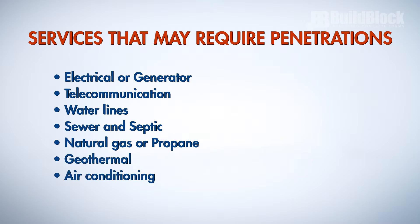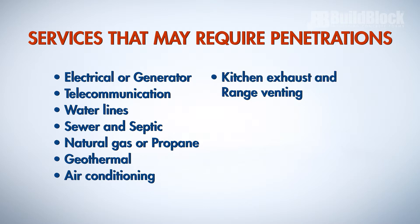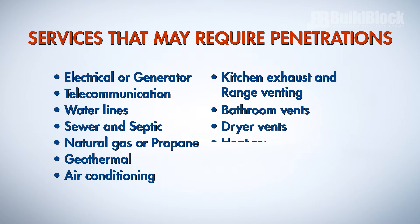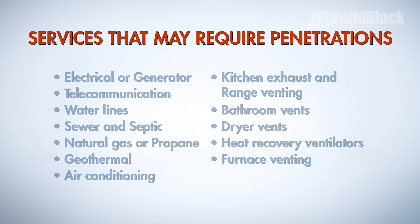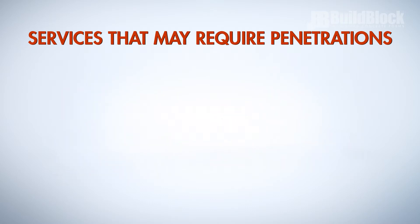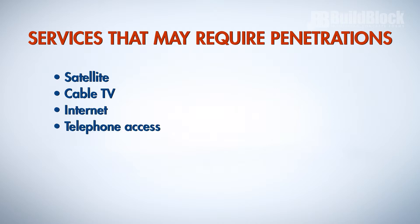It may also be necessary to cut penetrations for several types of ventilation, such as kitchen exhaust and range venting, bathroom vents, dryer vents, heat recovery ventilators, and furnace venting. Lastly, mark and cut openings for access to satellite, cable TV, internet, and telephone access, as well as any pet access doors.